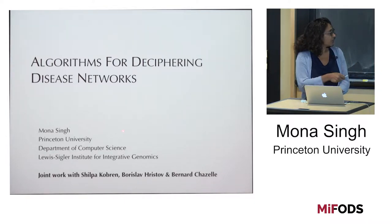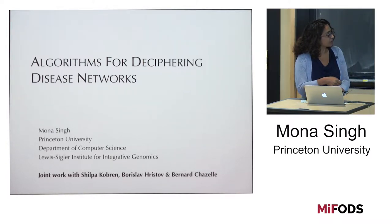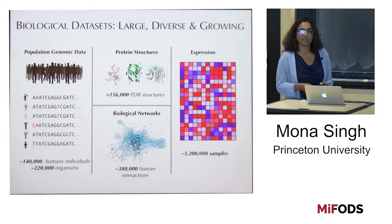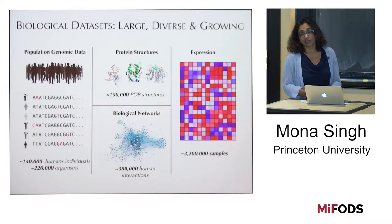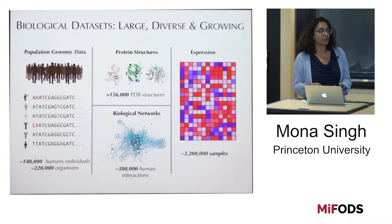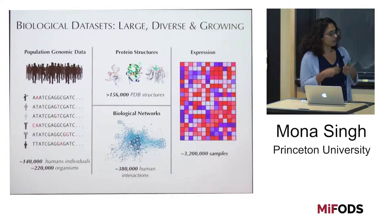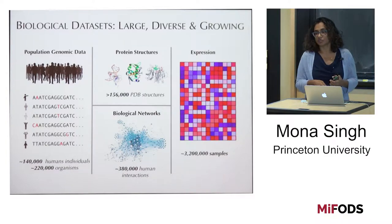This is largely the work of Shilpa Kobrin and Borislav Hristov, two recent grad students in my group, and also some of this is in collaboration with my colleague Bernard Chazelle. We're now in an era where high-throughput experimental methods abound in biology, and they've resulted in really large and diverse and growing datasets. The types of data are really varied — from sequence data representing genomic or genetic information, to three-dimensional shape data of molecules, to high-dimensional measurements of cell state, and to various types of biological networks.